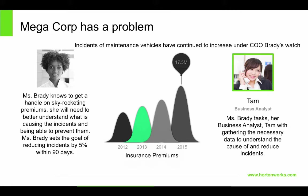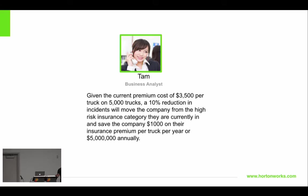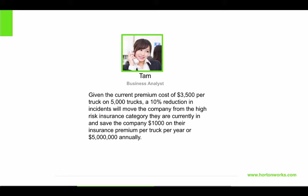Megacorp wants to avoid these issues, lower the insurance cost, and do preventative maintenance. These are actual problems our customers have been facing that we have helped solve. Megacorp's CEO hires a business analyst called Tam and asks her what they can do to lower insurance costs. Tam estimates they're paying $3,500 per truck on 5,000 trucks total. If they just reduce incidents by 10%, it will save the company $5 million per year.